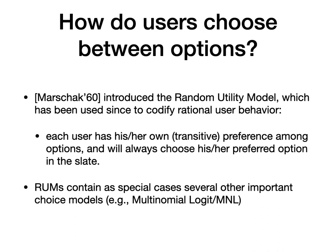A very famous model, introduced by Marshak in the 60s, is called RAM, or Random Utility Model. In this model, each user has a total order among all the options in the world, and given a slate — a set of possible options — will just choose the option in the slate that's highest in his or her order.